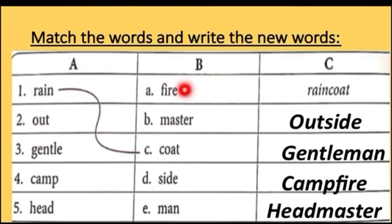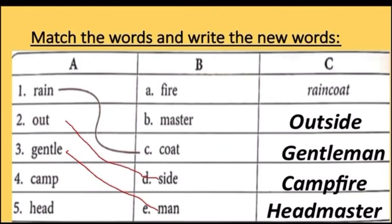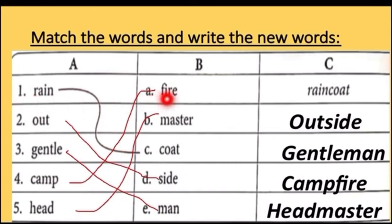Now let's do a matching words exercise. In part A, 'rain' is there and one is already done for you. Next: 'out' and 'side' becomes 'outside'. 'Gentle' and 'man' becomes 'gentleman'. 'Camp' and 'fire' becomes 'campfire'. 'Head' and 'master' becomes 'headmaster'. We have made all new words by joining two words together.